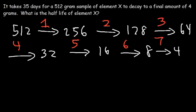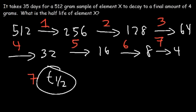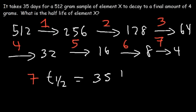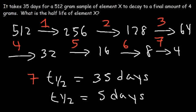It takes seven half-lives to go from 512 to 4 grams. Seven half-lives equals a total time of 35 days. Dividing 35 by 7 tells us the half-life is 5 days.